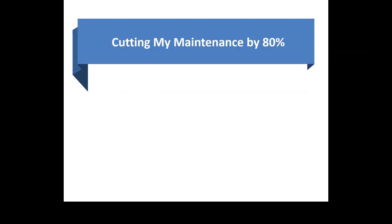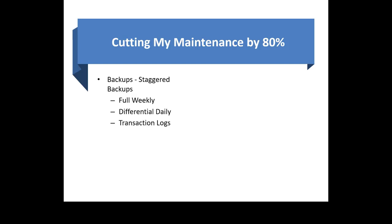Let's start with staggered backups. Not every large database has to be backed up on Sunday. Some large databases, depending on size and importance, can run on Monday, Wednesday, Friday, or Saturday. Some can start at 8 PM, others at 10 PM — that's what staggering means. Typically, you'd run a full backup weekly, a differential daily, and transaction logs hourly or every 15 minutes.